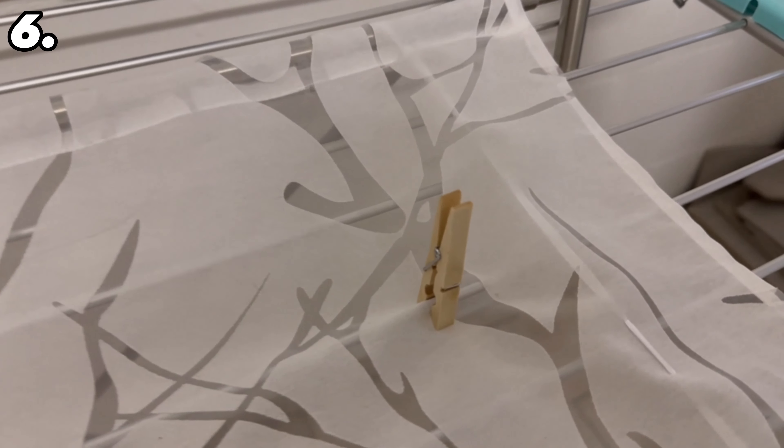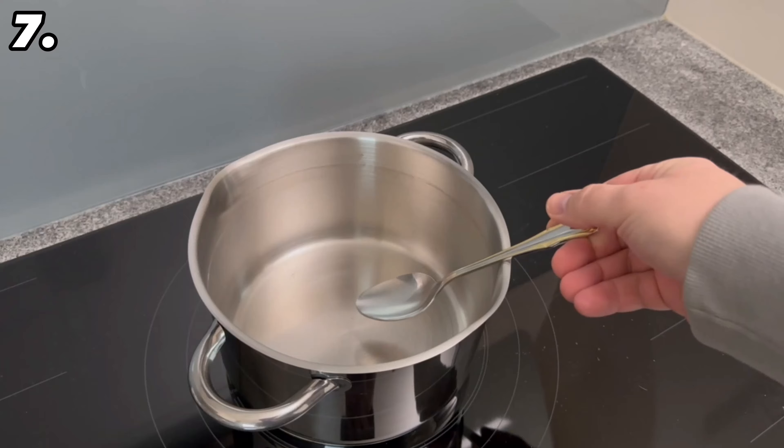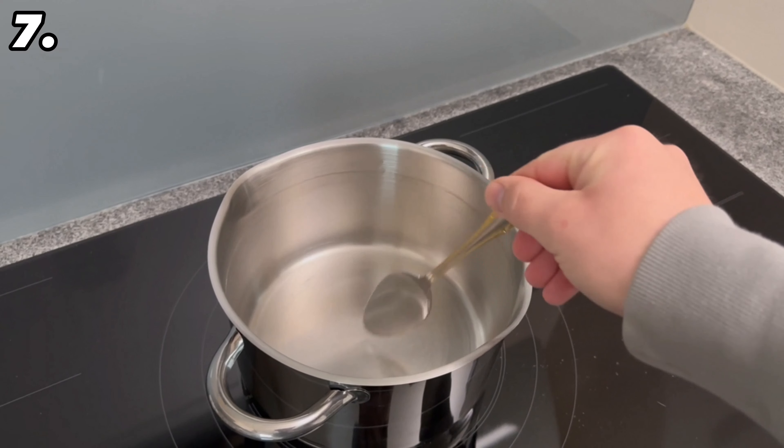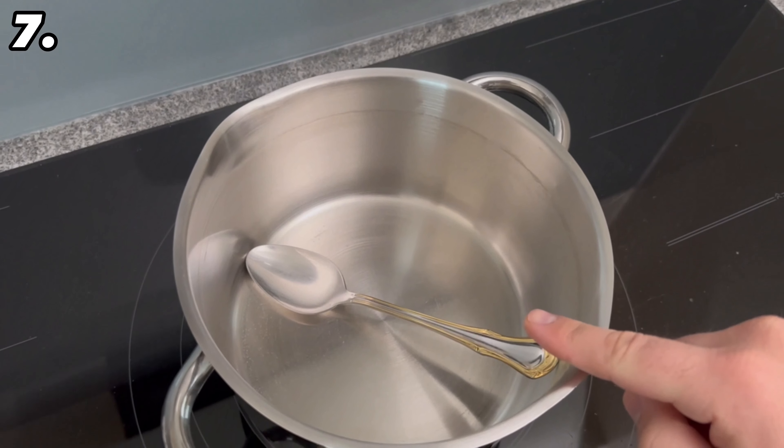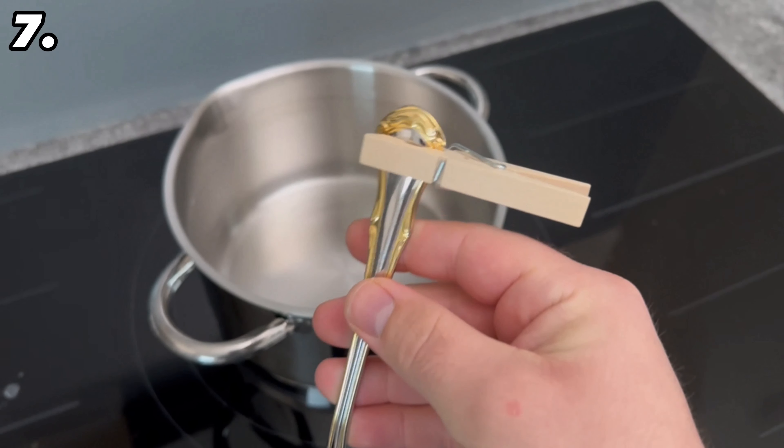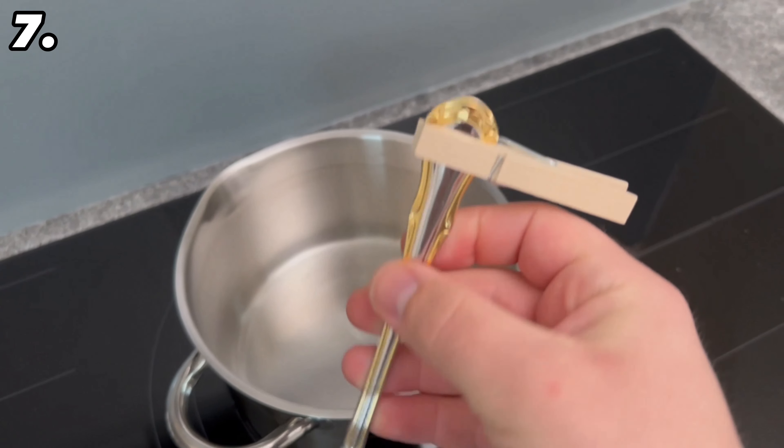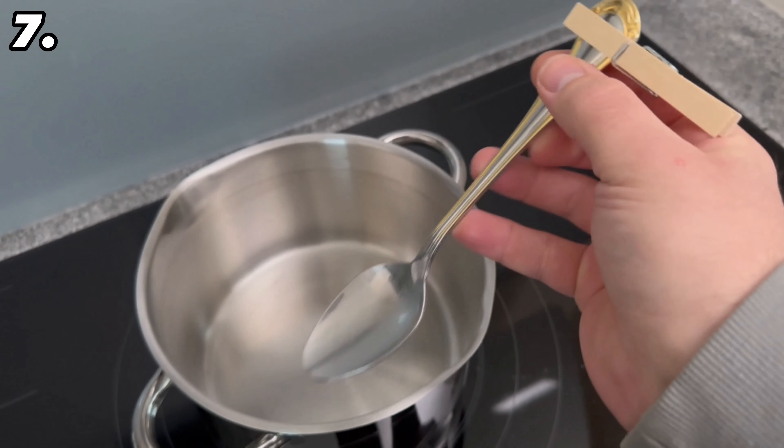If you are cooking something and using a spoon, you are probably familiar with the problem of the spoon slipping into the pan from time to time. To prevent this from happening in future, you can clip a clothespin to the top of the spoon. The spoon will never slip into the pot again.